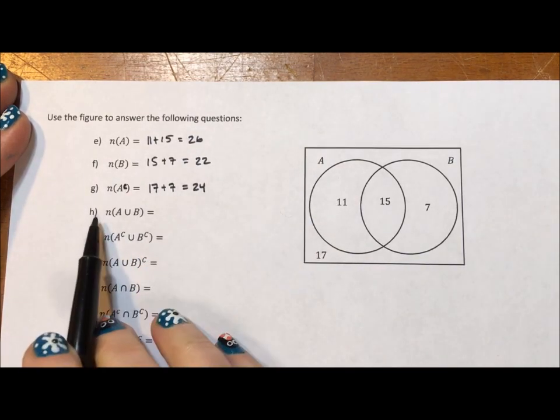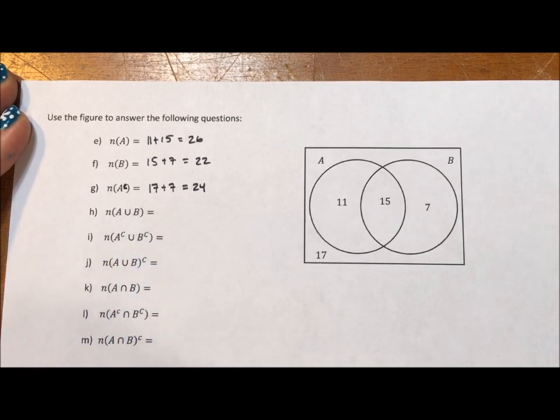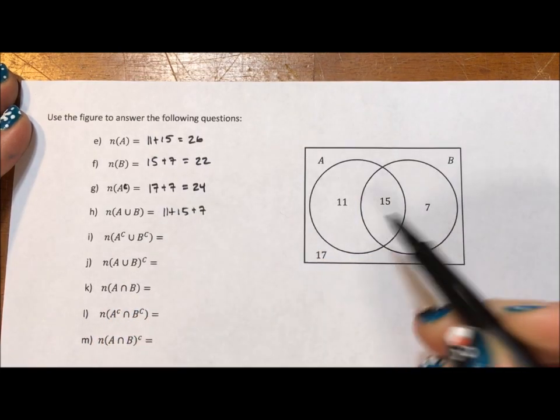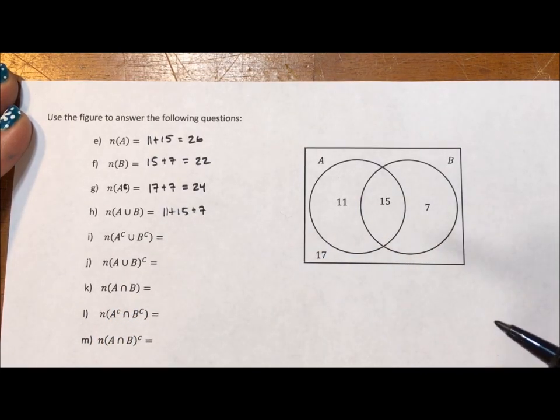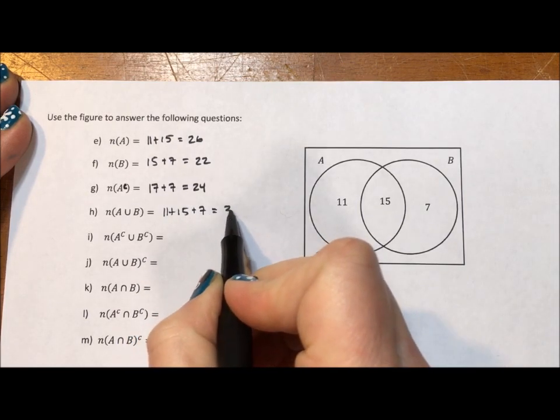Now the number of elements that are in the union, union means putting everything together. So that's going to be the 11 plus 15 plus 7. We want to bring all bits together. So we have 26 plus 7, which is 33.